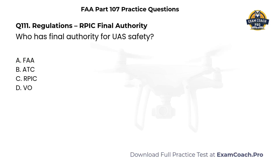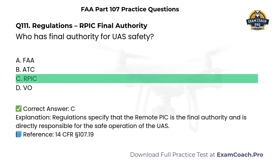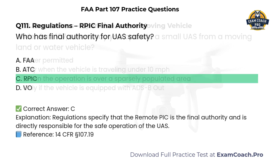Regulations. Remote PIC final authority. Who has final authority for UAS safety? A. FAA. B. ATC. C. Remote PIC. D. Visual observer. Correct answer: C. Regulations specify that the remote PIC is the final authority and is directly responsible for the safe operation of the UAS.